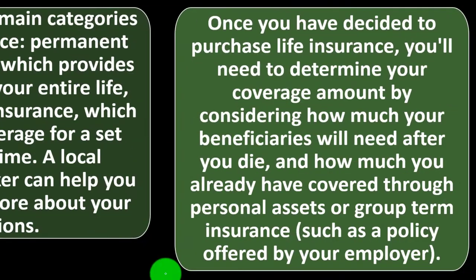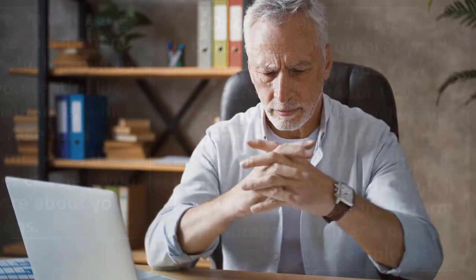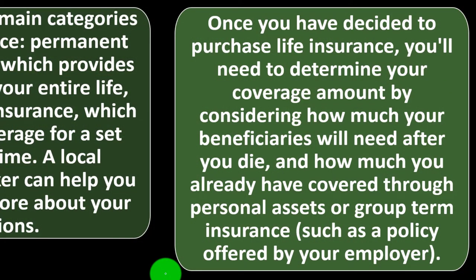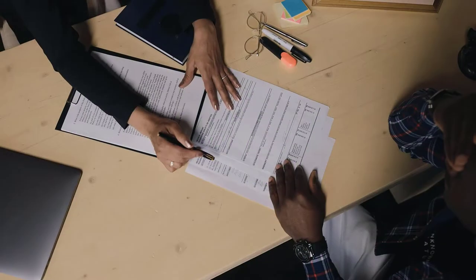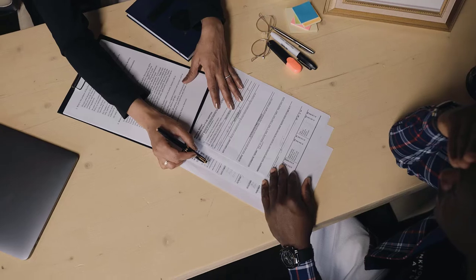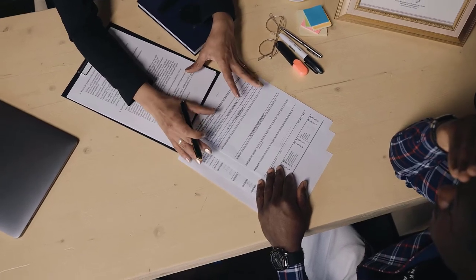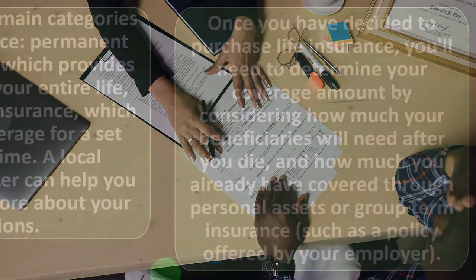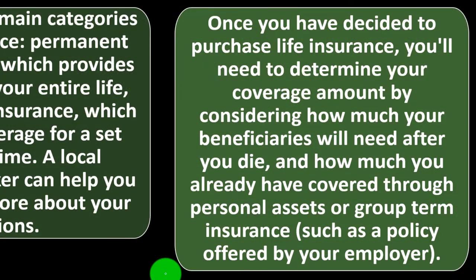Once you have decided to purchase life insurance, you'll need to determine your coverage amount by considering how much your beneficiaries will need after you die — if I died, how much would I need to cover the benefits they'll need given I'm no longer earning money? Also consider how much you already have covered through personal assets or group term insurance, such as policies offered by your employer.